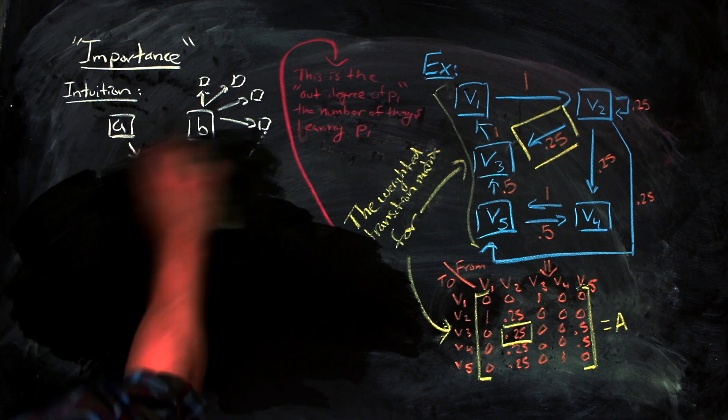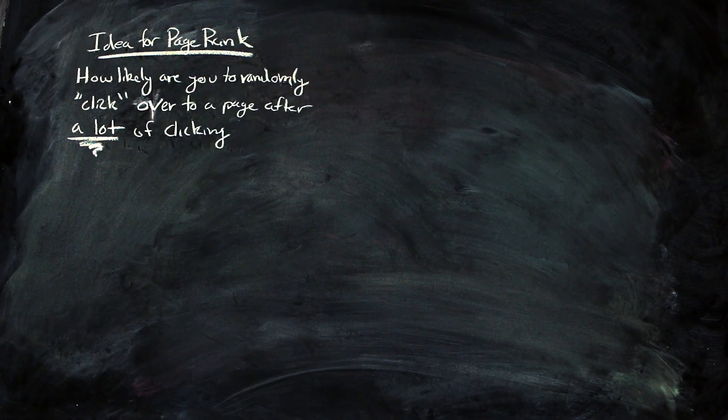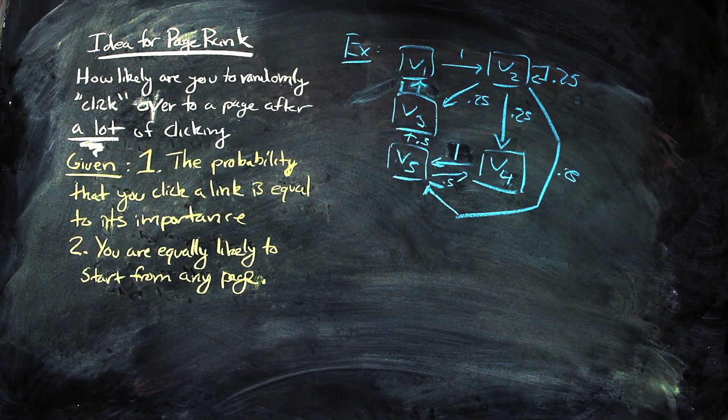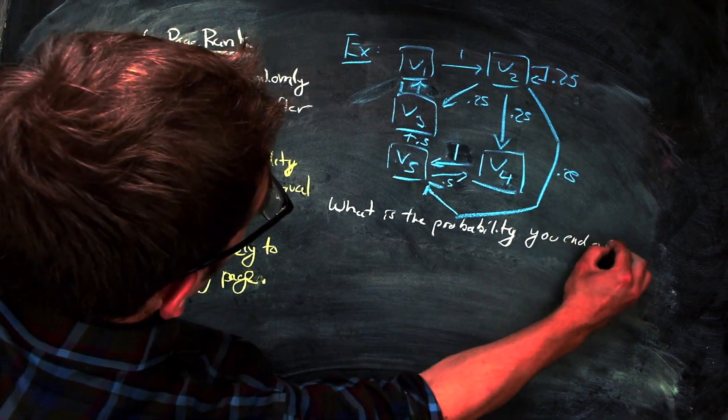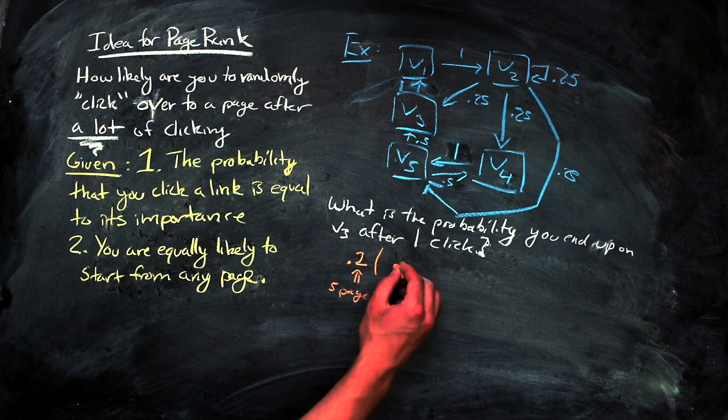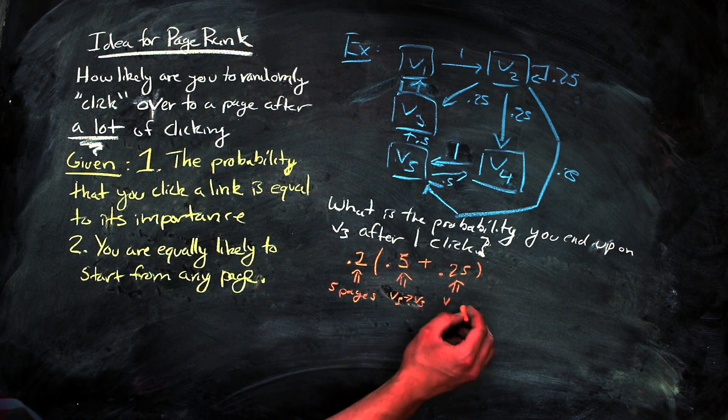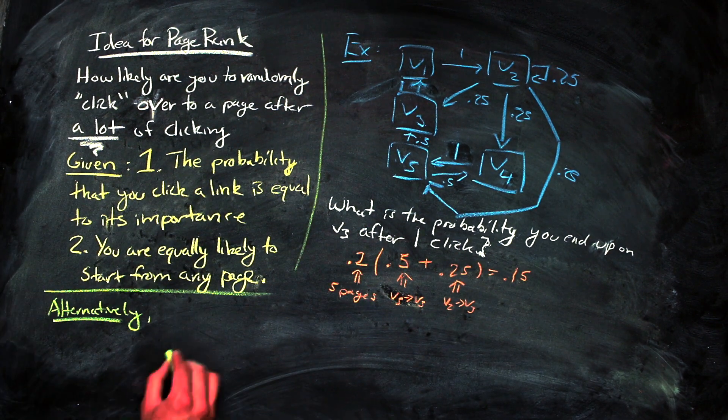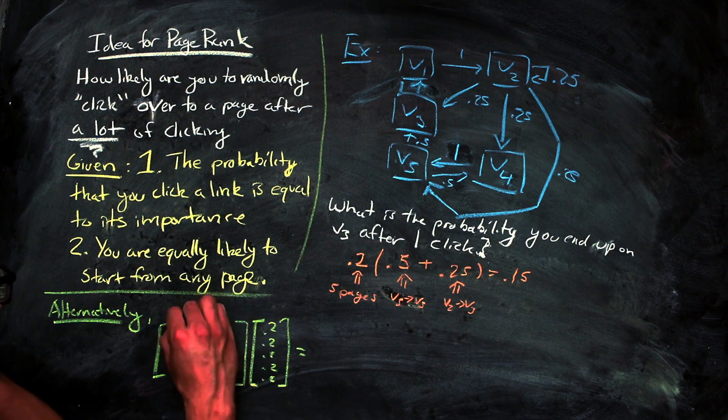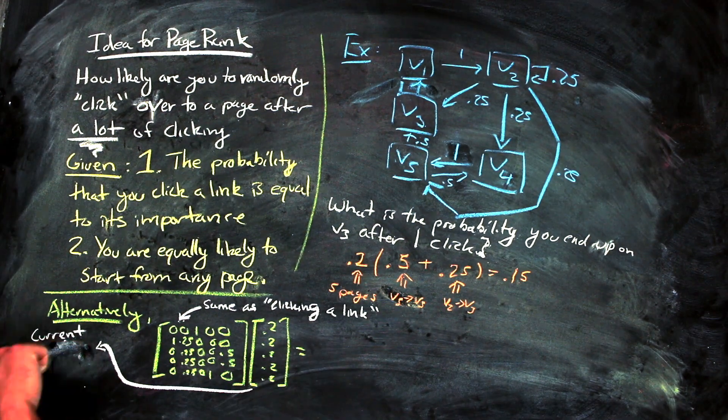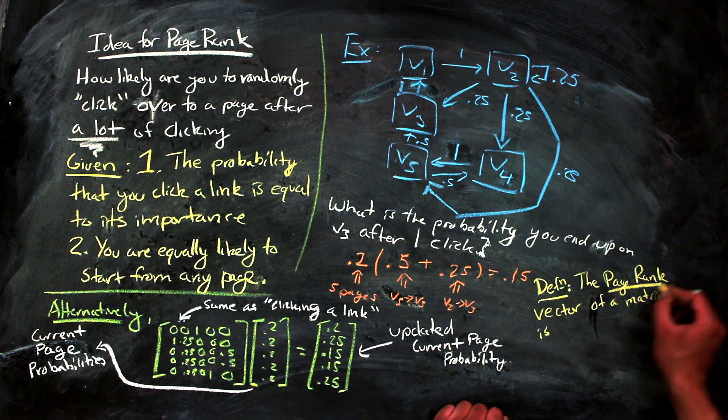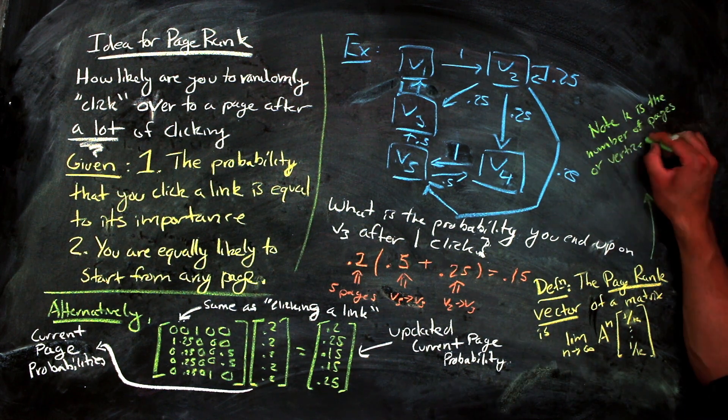The page rank is based on how likely you are to visit a page, given this matrix, that describes the importance relationships that link the pages together. In particular, with our previous example, assume that you start on any of the five pages with equal likelihood. Then the odds that you would move to page 3 with your first click is just the probability that you start on page 2 and click the link to page 3, or that you start on page 5 and click the link to page 3, which gives a probability of 0.15, or 15% of the time you would end up on page 3. Each time we multiply by this weighted transition matrix, a link is clicked, and the probability of what page you are on is updated as the resulting vector. The page rank vector is the vector of probabilities that you get after taking the limit as the number of times you multiply by the matrix goes to infinity, or rather, as the power of the matrix goes to infinity.